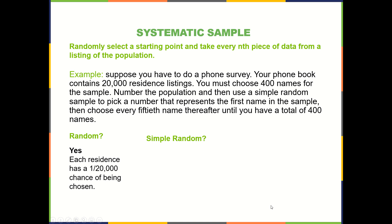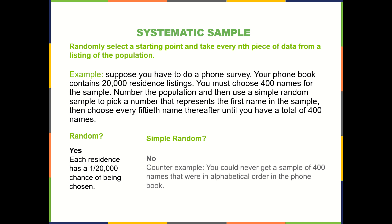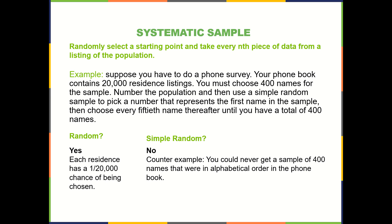Is it simple random? Does every single collection of 400 names have an equal chance of being chosen? Whenever you're trying to determine if something is simple random, if you can think of one collection that is not possible while using this method, you've found a counter-example which shows it is not simple random. It's often easier to prove it's not simple random with a counter-example. A good counter-example here: you could never get a sample of 400 names that were in alphabetical order.